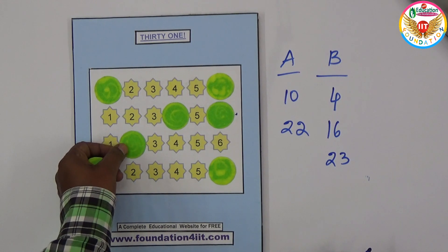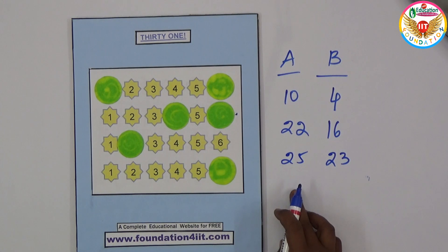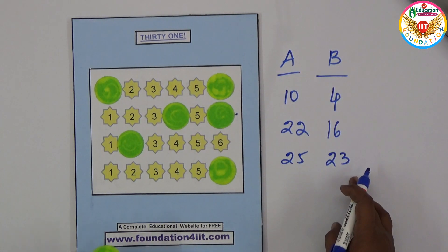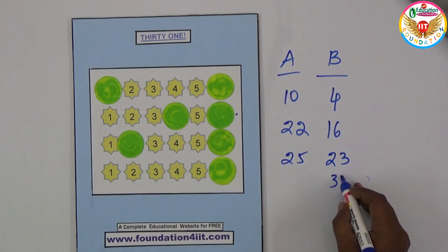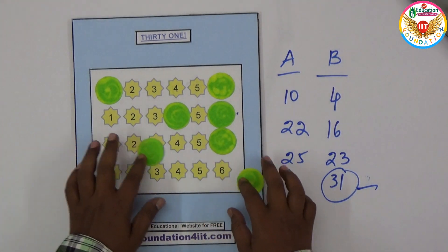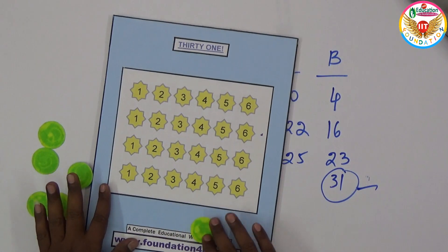Then B can win by keeping one more 6, that is 31. So chance for B. Whoever will get the first 31 is the winner. To make perfect addition, by using the logical way, the child can participate in this and enjoy the game.